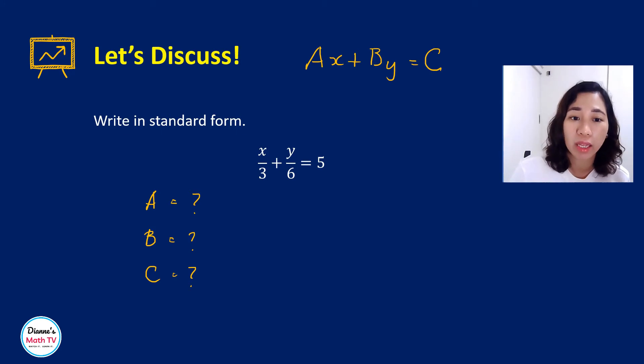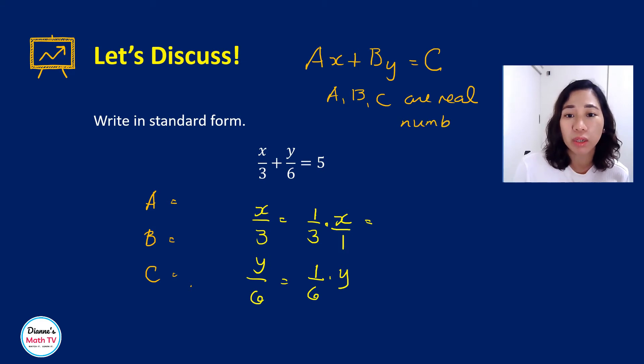What is that number multiplied to x here? Take note that x over 3 is the same as 1 third times x, and then y over 6 is equal to 1 sixth times y. Why is that true? Whenever you do not have a denominator, that means it's 1. And then how do you multiply fractions? Numerator times numerator, and that is x. Denominator times denominator, and that is your 3 over there. So what this is saying is that, because remember in our definition, we said that A, B, and C are real numbers. It doesn't have to be an integer.